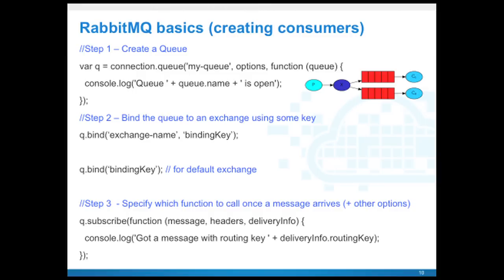Finally, let's talk about creating consumers. Creating consumers involves three steps, mainly because RabbitMQ provides a lot of flexibilities and features. First we create a queue by calling connection.queue. You can give a queue name and there are a whole bunch of options you can provide. You get a reference to queue. After step one, we have just created these red boxes here.